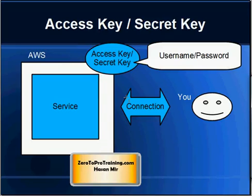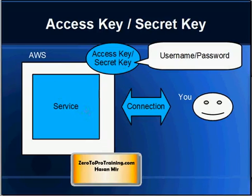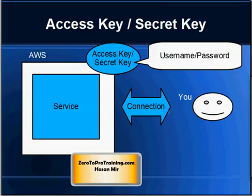However, private/public key security is not the only security at AWS. You need a username and password to use Amazon services — the username is called the access key and the password is called the secret key. Since Amazon is an infrastructure-as-a-service platform, not only you but also a program can make connections using an API. The access key identifies you as a partner and is used in API calls as well.